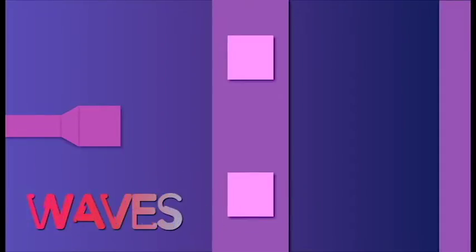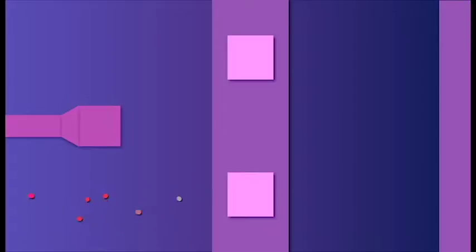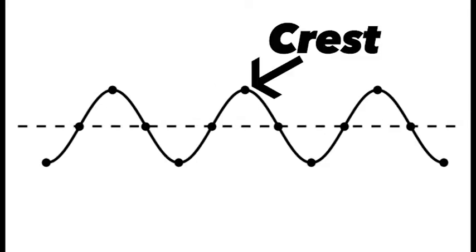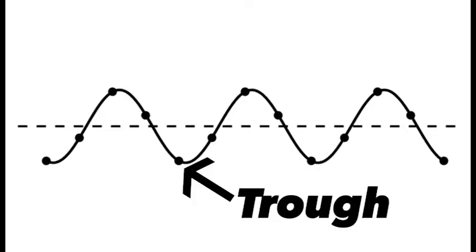Here we have a double-slit experiment with a wave emitter, two slits, and a back wall. But before we start, let's review waves. This is the highest point of the wave, we call it the crest. This is the lowest point of the wave, it's the trough.